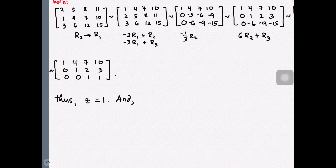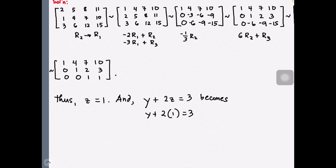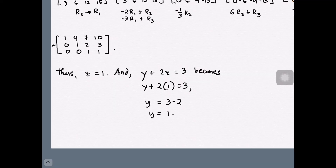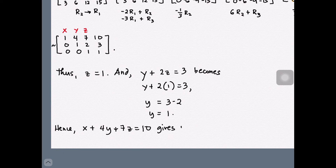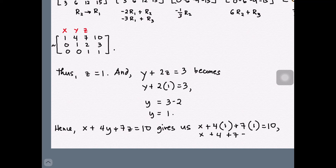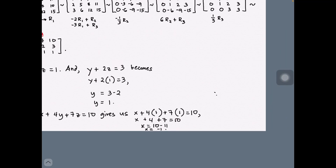Converting this augmented matrix back to its linear form, and since z equals one, we substitute that back in. The first, second, and third rows represent equations with coefficients for variables x, y, and z. Substituting the obtained values for y and z into the first row equation, we solve for x. Therefore, the solution for this linear system is x equals negative one, y equals one, and z equals one.